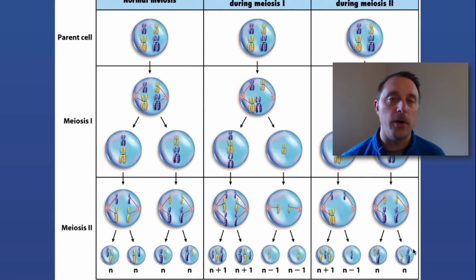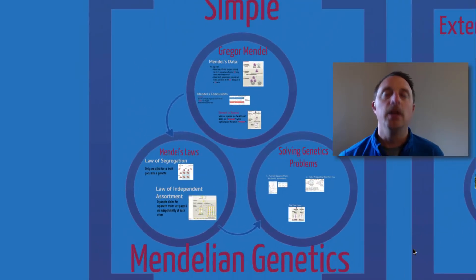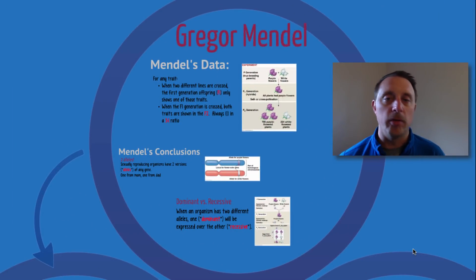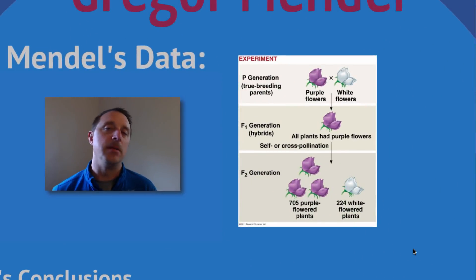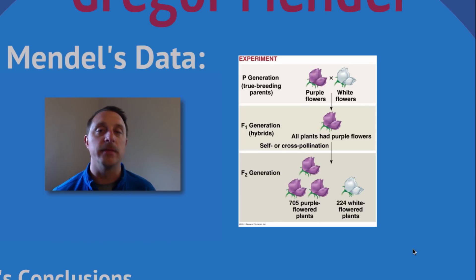That wraps up the first part of our unit on meiotic cell division. Now we'll move into the second part on genetics, starting with a quick overview of simple Mendelian genetics. Gregor Mendel worked on the inheritance of traits in pea plants, and he really set the basis for almost all of our understanding of genetics and inheritance of traits.